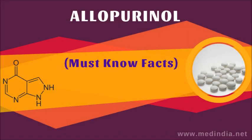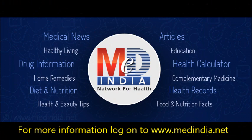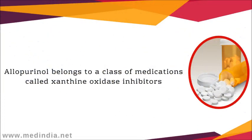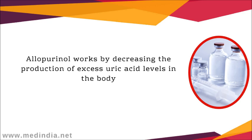Must know facts about allopurinol. Allopurinol belongs to a class of medications called xanthine oxidase inhibitors. It works by decreasing the production of excess uric acid levels in the body.